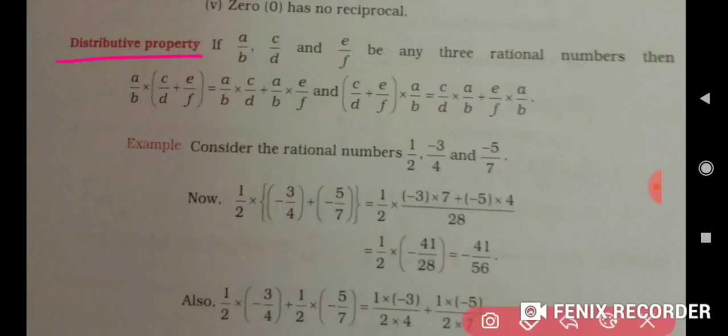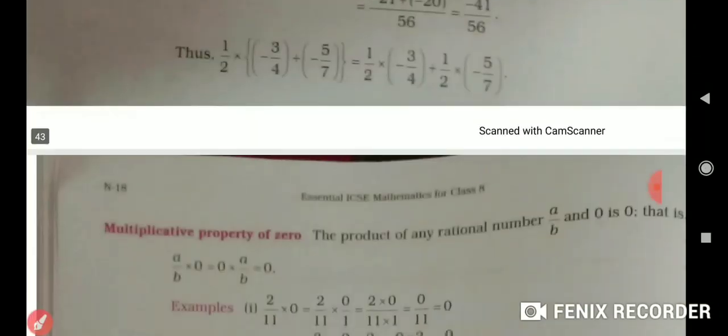For the distributive property, you have to look for common numbers or factors that you can factor out to one side, which makes your calculation easier. I will now explain all these properties with the help of some examples.